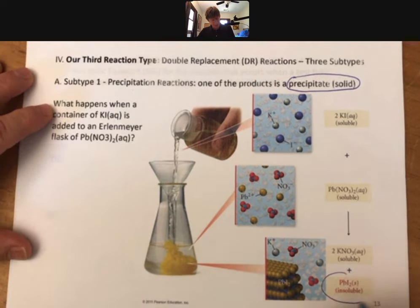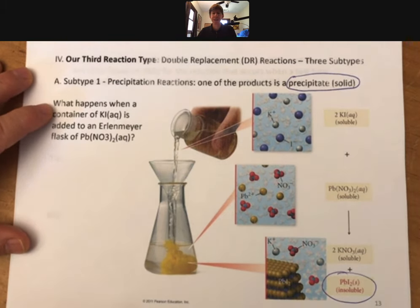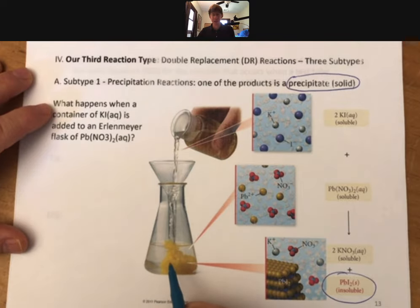And all that precipitate is is a solid that forms in a double replacement reaction. And so we got out the color because we wanted to show you this brilliant yellow color, and it's a cloudiness too. That's another way of looking at it.